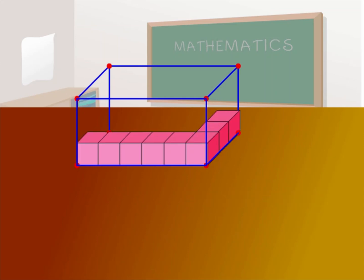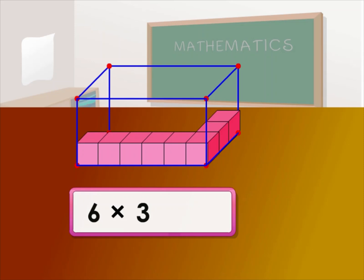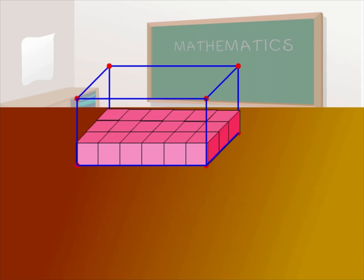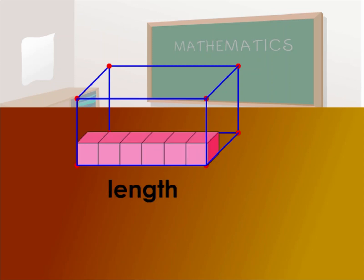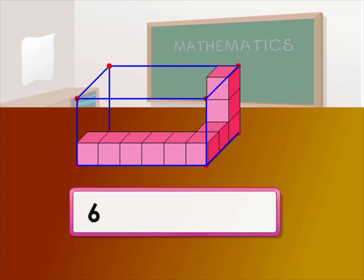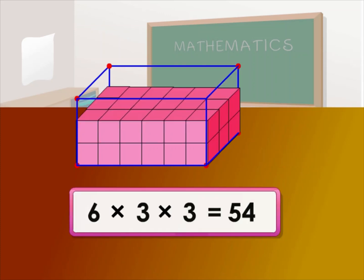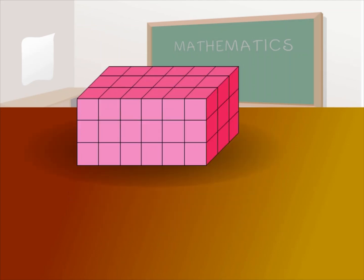And the number of unit cubes to make one layer is 6 times 3, that's equal to 18 unit cubes. Now let me fill this cuboid with unit cubes to the top. The height has 3 unit cubes. To find the number of unit cubes that fill the cuboid, I multiply the length, the breadth, and the height: 6 times 3 times 3, that is equal to 54 unit cubes. The amount of space filled by 54 unit cubes is the volume of the cuboid.